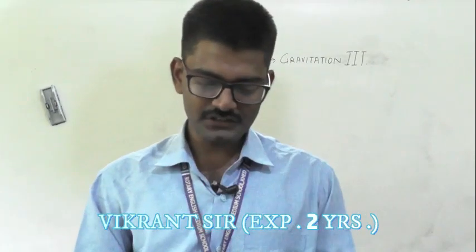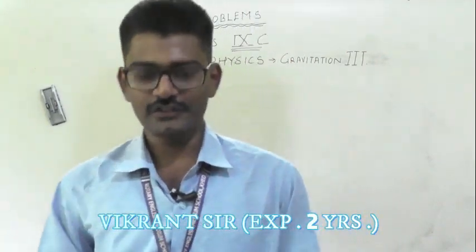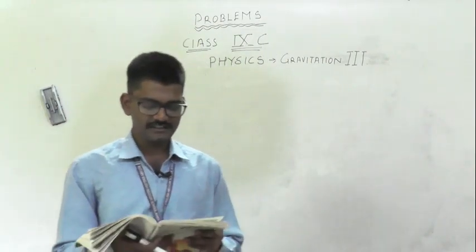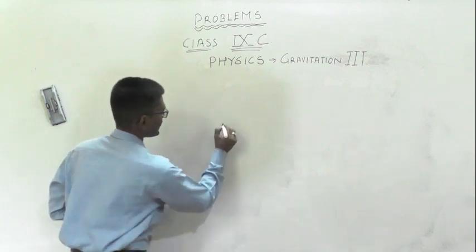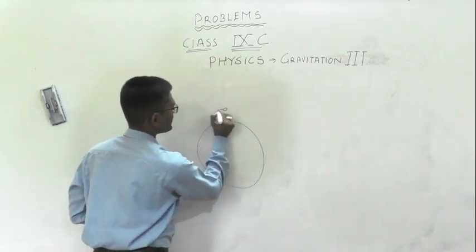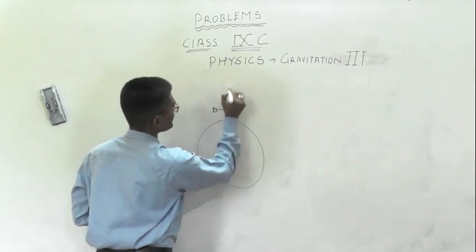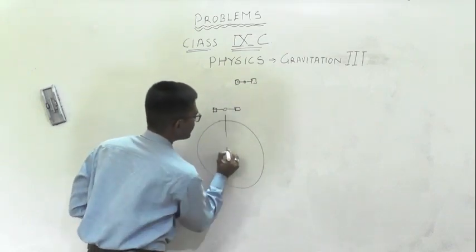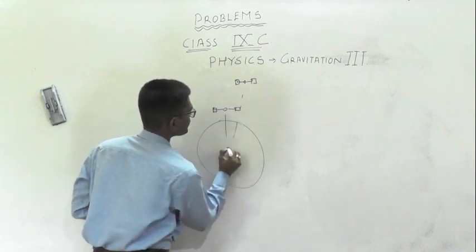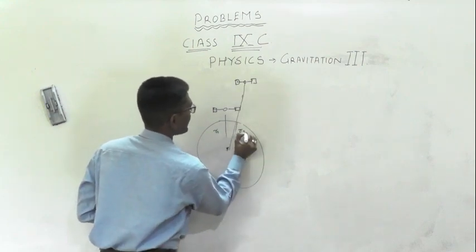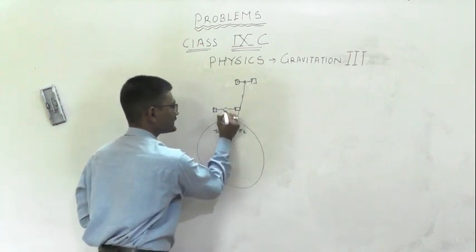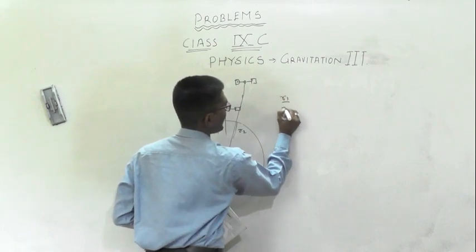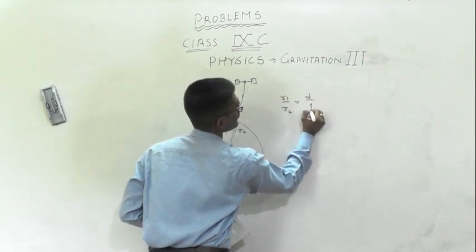Okay students, so we were talking about the first question. The two satellites of identical masses orbit the earth at different heights. We will draw the question. Two satellites are at different heights, orbiting. This is the first satellite and this is the second satellite. They are orbiting at different heights. The ratio of the centers of the two — let us call this R1 and this as R2. The ratio of this distance is given as D is to 1. That means R1 upon R2 is D is to 1.